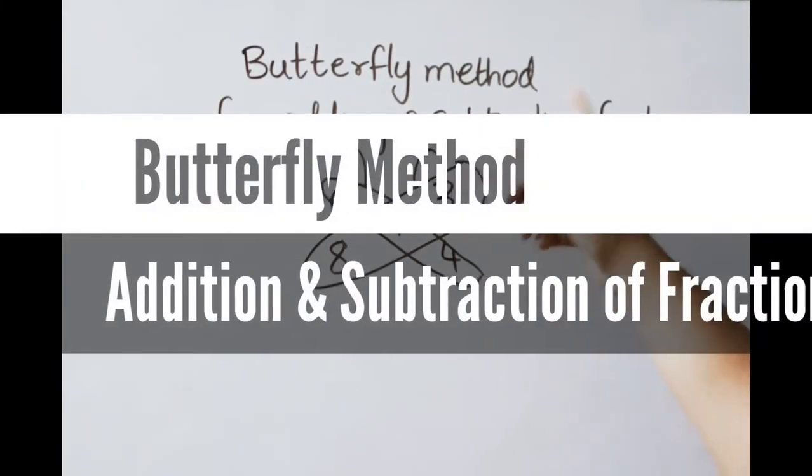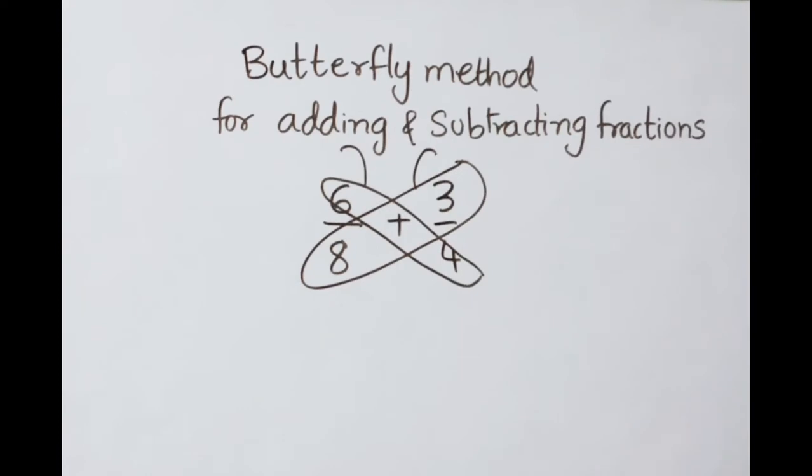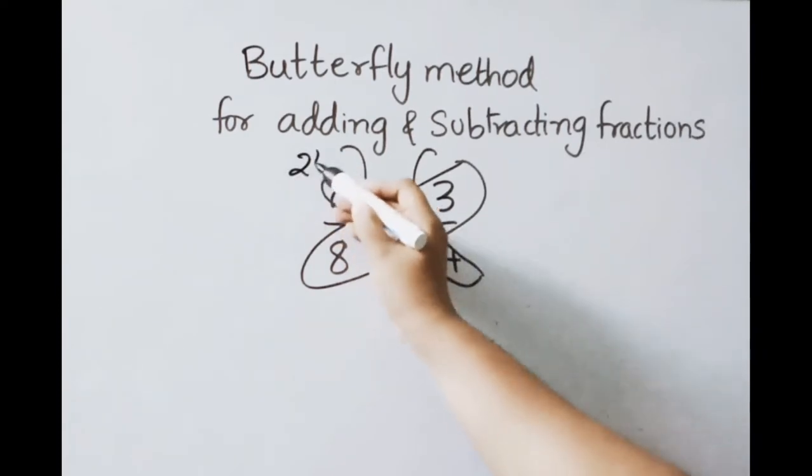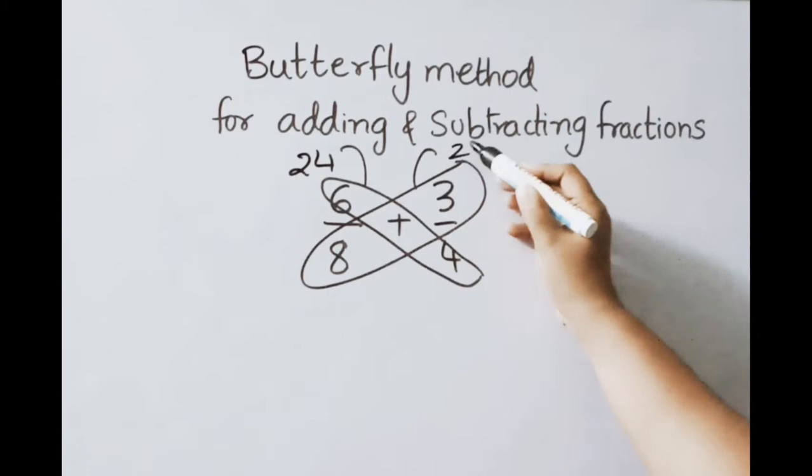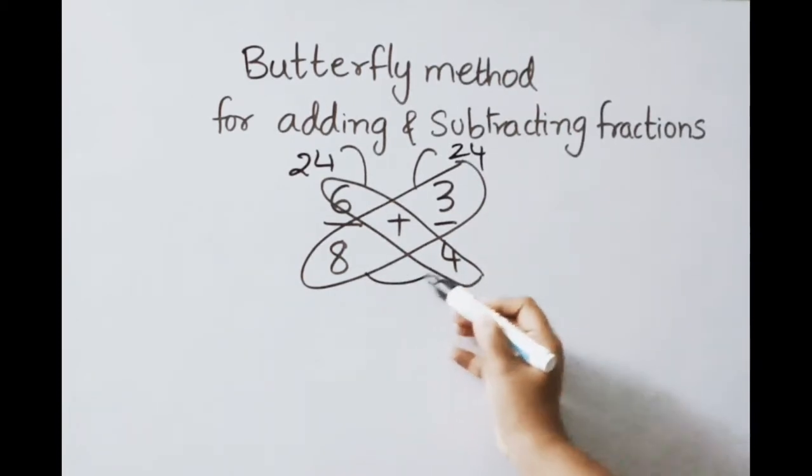See butterfly method for adding and subtracting fractions. Here example is 6 by 8 plus 3 by 4. So 6 and 4 and 3 and 8 to draw like this. Now 6 4's are 24. 3 8's are 24.